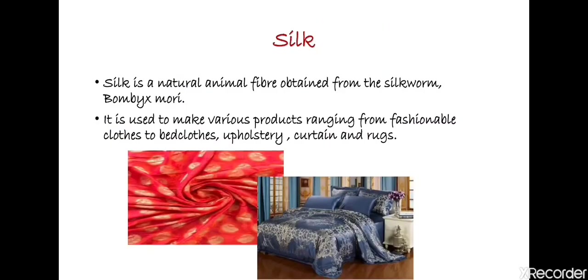Firstly, we will discuss about what is silk. Silk is a natural animal fiber which is obtained from the silkworm called Bombyx mori. It is a fine and strong shining fiber which is made up of animal proteins, and it gives out a smell of burning hair when it is burnt. The rearing of silkworms for obtaining silk is called sericulture.